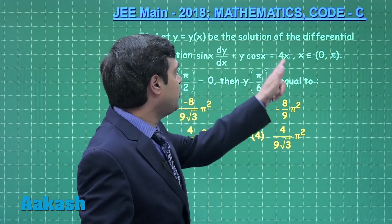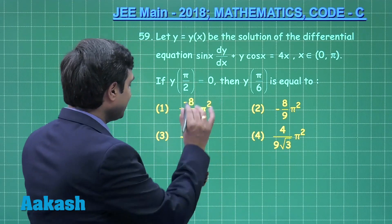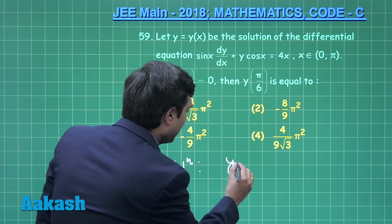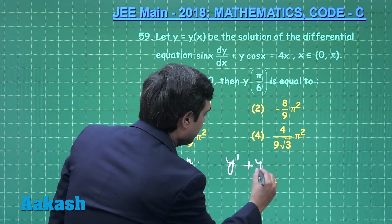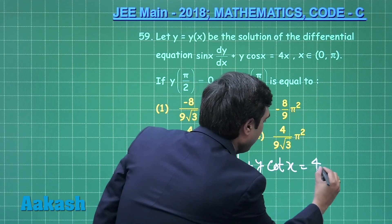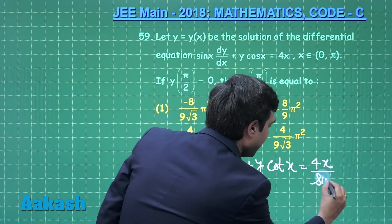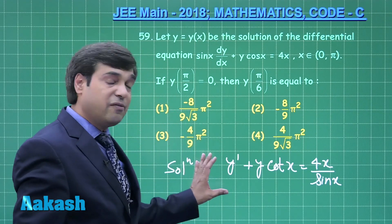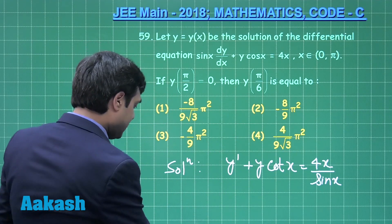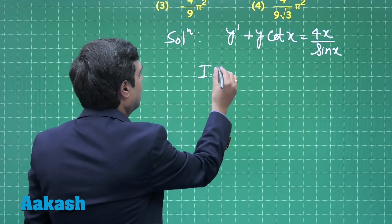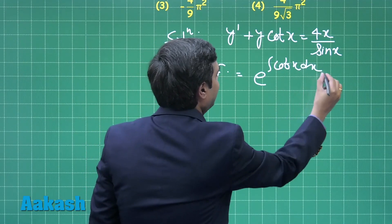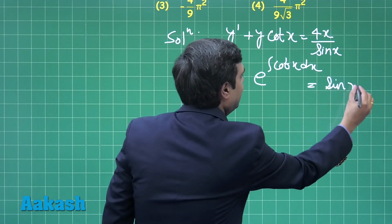First, we need the solution of this given differential equation. We can see that the given differential equation is dy/dx plus y·cot(x) = 4x/sin(x). The integrating factor of this equation is e to the power integral of cot(x) dx, which simplifies to sin(x).